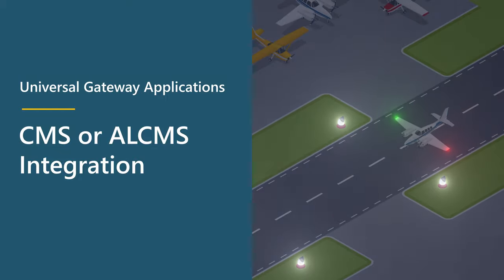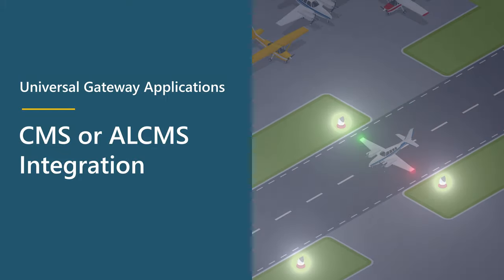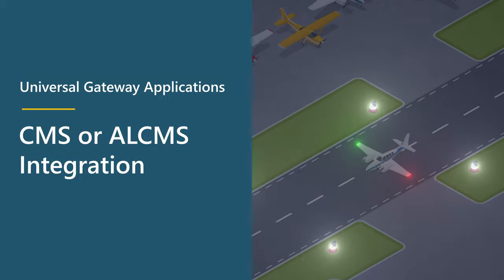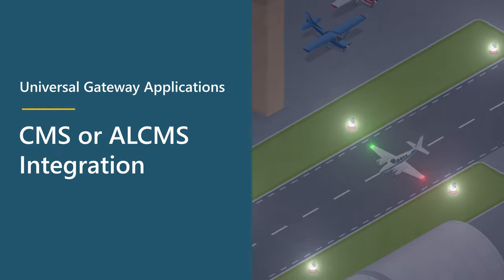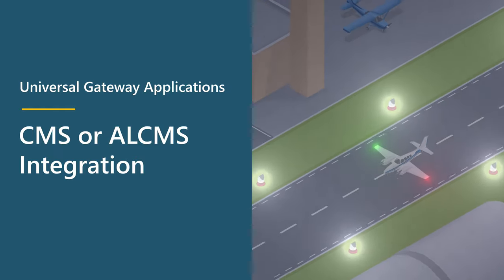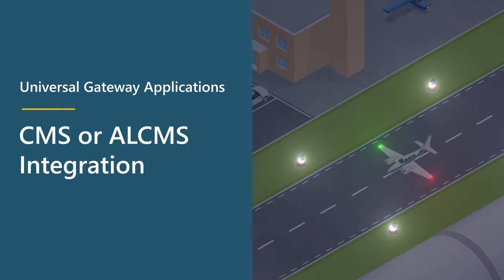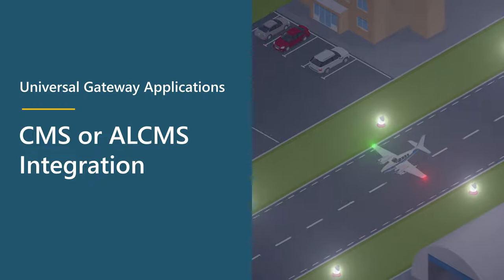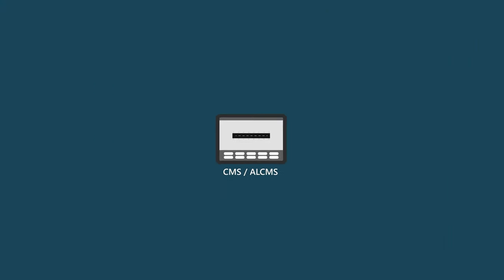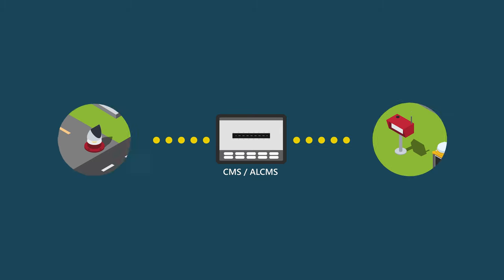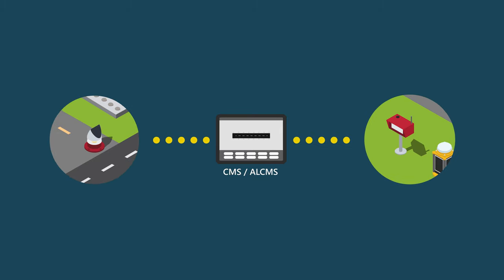The Universal Gateway can be used to integrate a Control and Monitoring System or Airfield Lighting Control and Monitoring System into another system. CMS or ALCMS is the control of several different airfield lighting systems into a single homogenous control system.